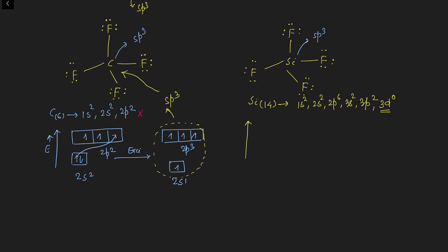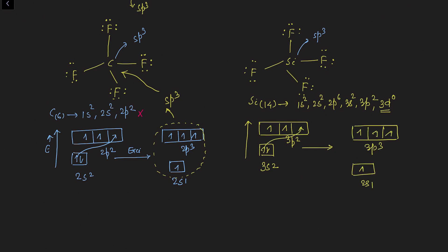In the ground state, silicon has 3s² and 3p². On excitation, one 3s electron jumps to the empty 3p orbital, and silicon uses one s and three p orbitals to form sp3 hybrid orbitals. However, in the excited state, the d orbital remains vacant. Up to this point, everything is similar between CF₄ and SiF₄.